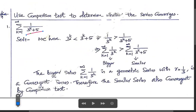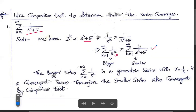We have 3^k < 3^k + 5, which implies that 1/3^k ≥ 1/(3^k + 5). So the series summation 1/3^k is greater than or equal to summation 1/(3^k + 5).